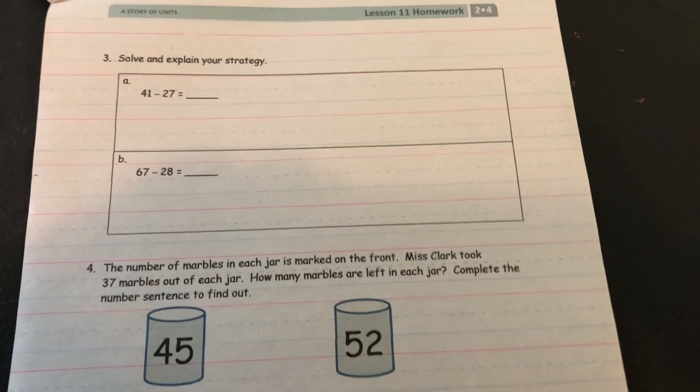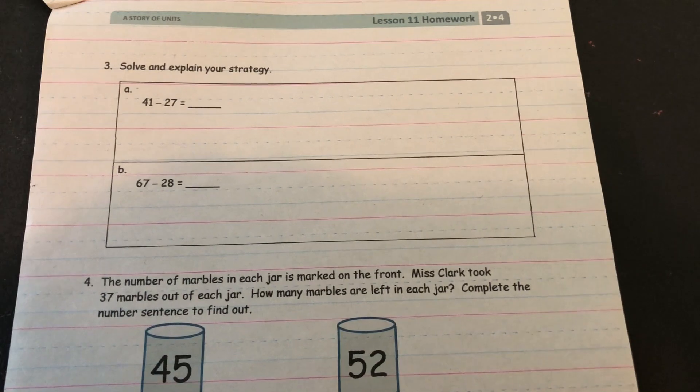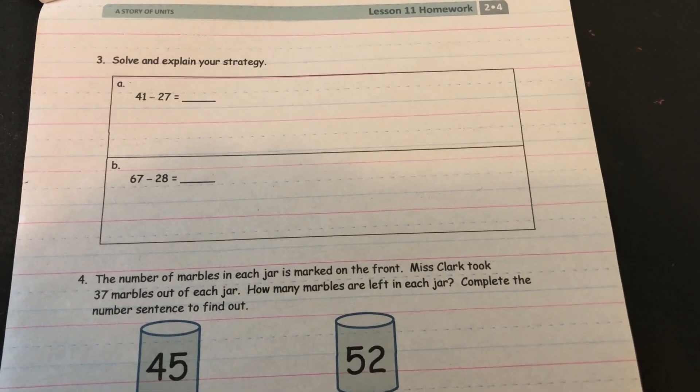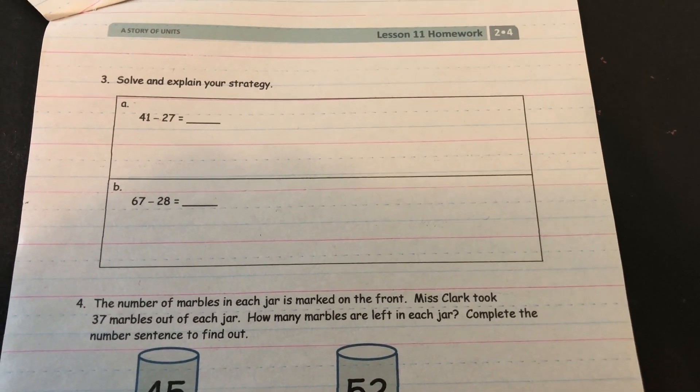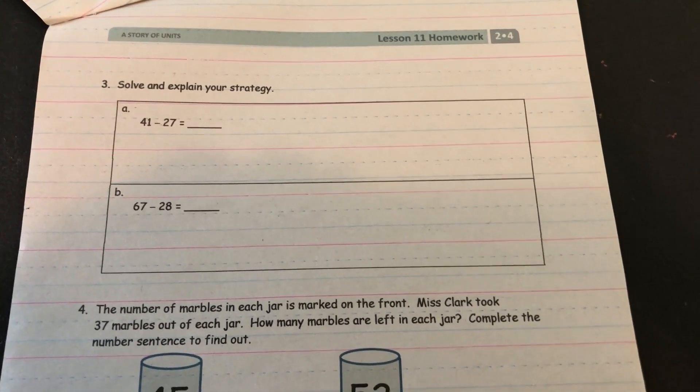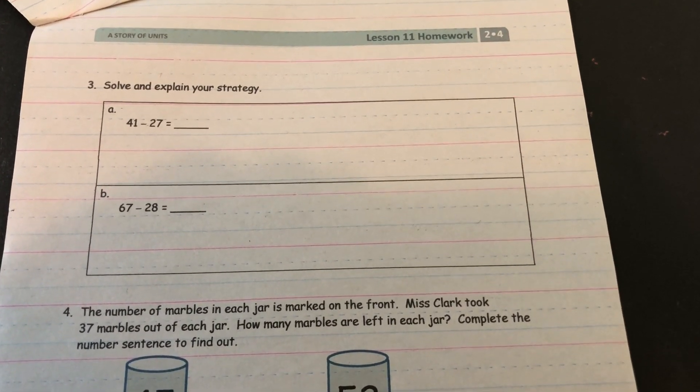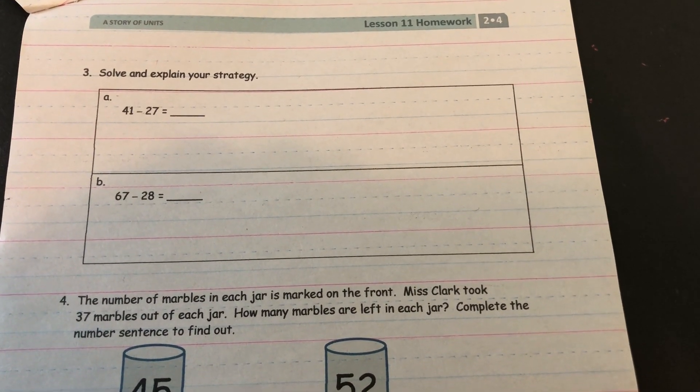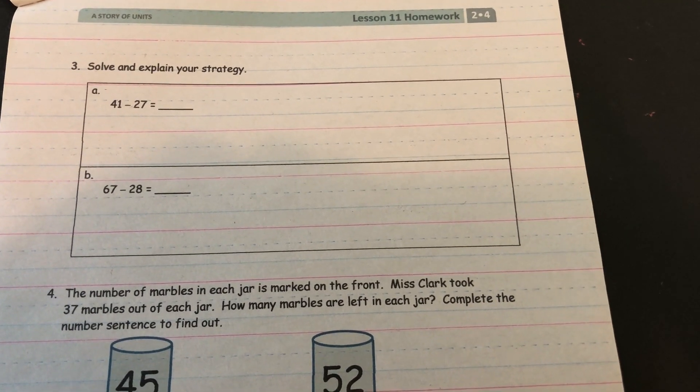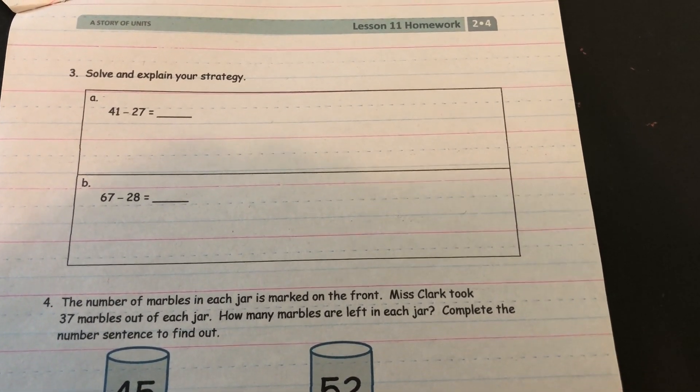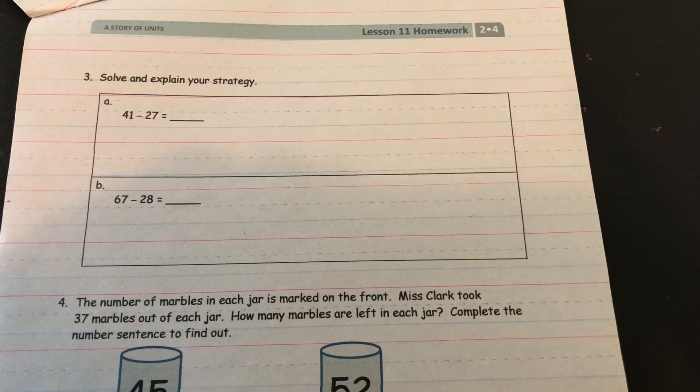Second page says to solve and explain your strategy. So you can use any strategy you like, any subtraction strategy you like to answer these. You could draw a place value chart, you could do a number bond, you could do a tape diagram, any strategies that you want.